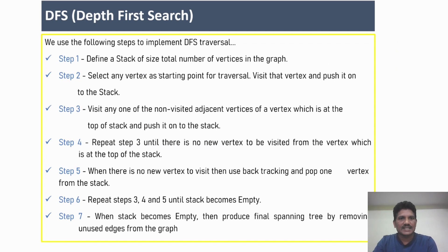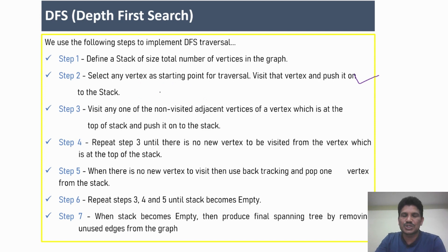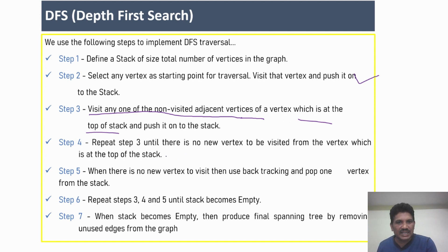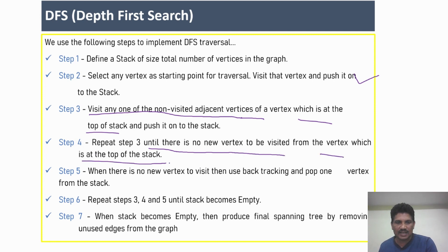Step one: define the stack of size equal to the number of vertices in the graph. Select any vertex as the starting vertex, then push it into the stack. Step two: visit any one of the non-visited adjacent vertices of the vertex which is at the top of the stack. Repeat step three until there is no new vertex to be visited from the vertex at the top of the stack.